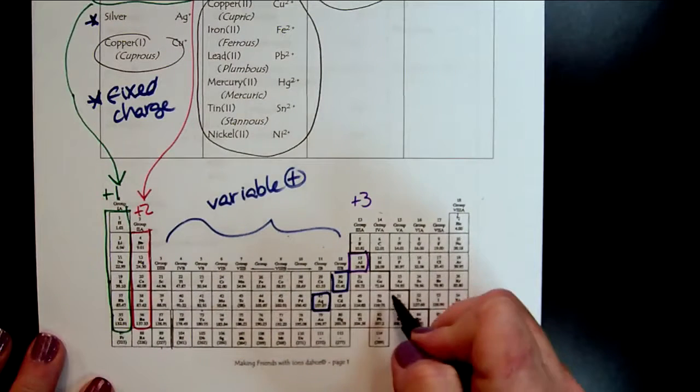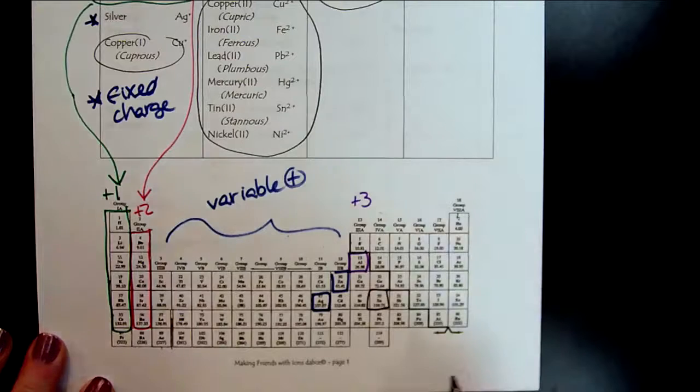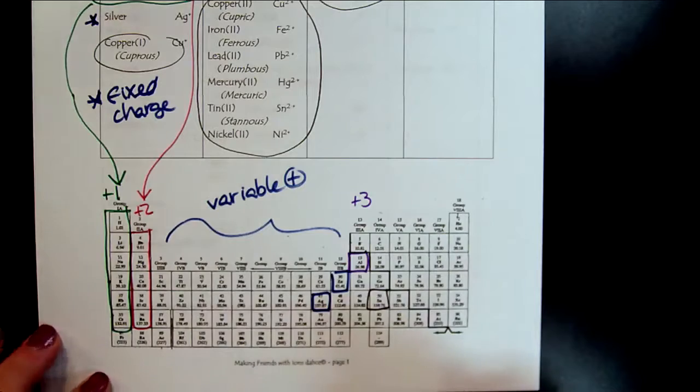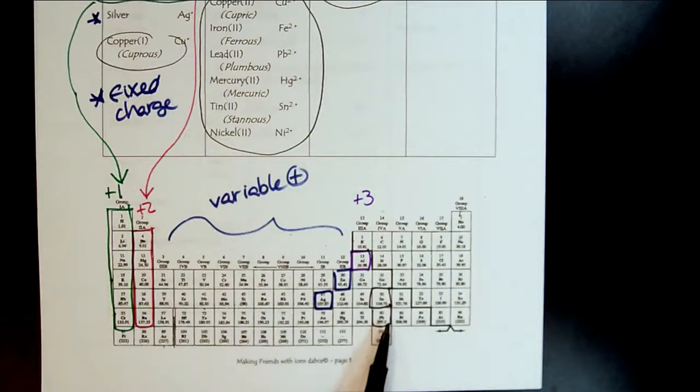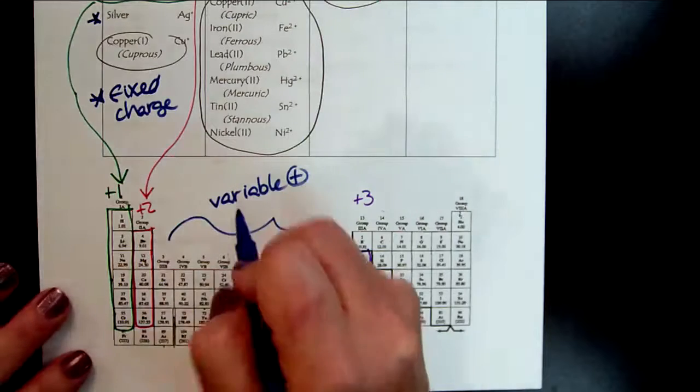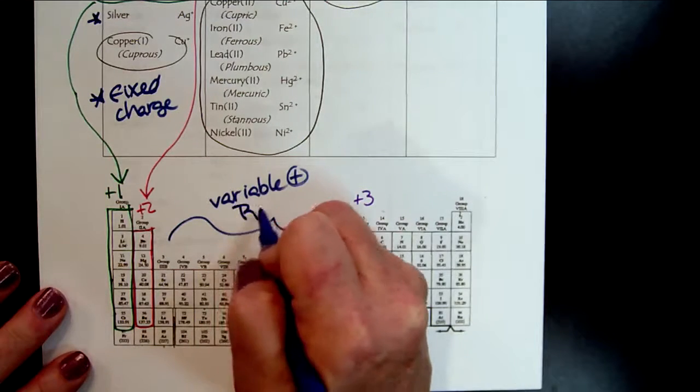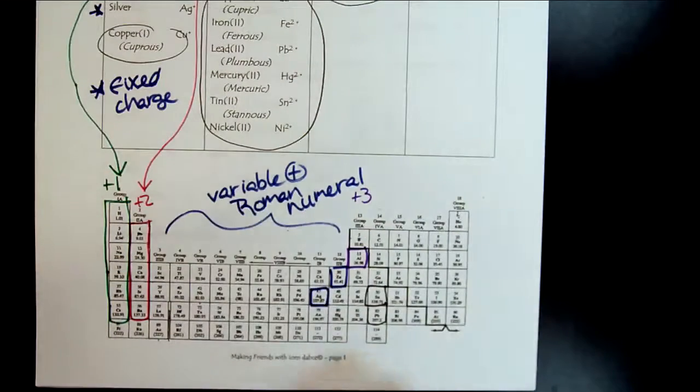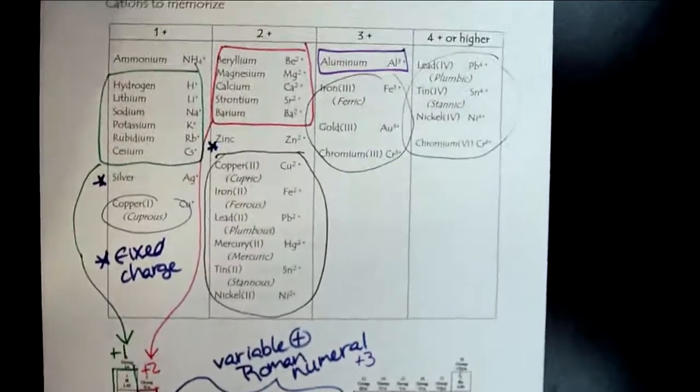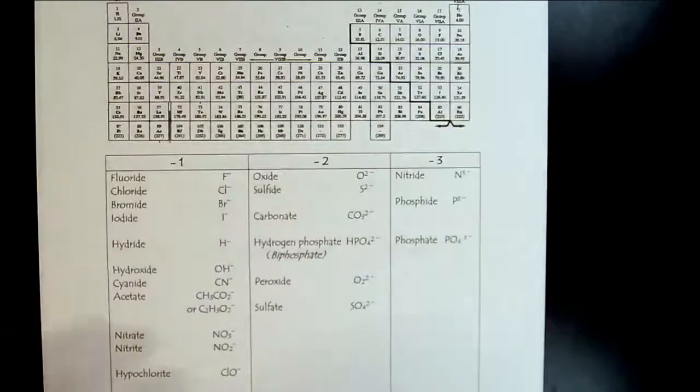And then we've also included tin and lead. So tin and lead also have variable charge. So just take advantage with the cations of looking at the position and the column number and that will help you to memorize. And remembering if there is variable charge, we've got to have that Roman numeral. If you were wondering in grade school why your teacher was teaching you about Roman numerals, it was for this class right here, Chemistry.